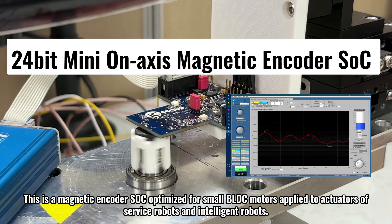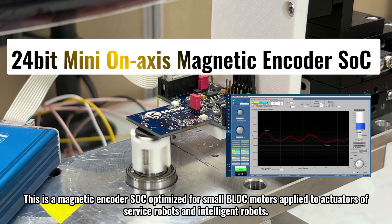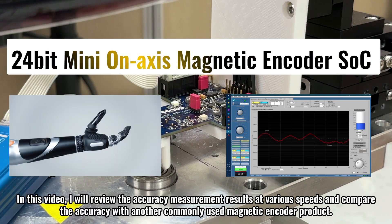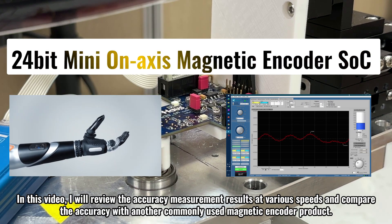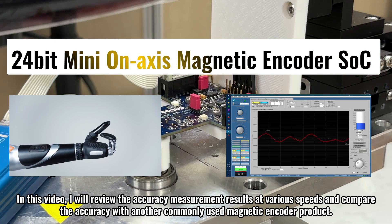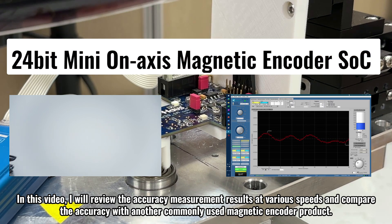I will demonstrate measuring the accuracy of a magnetic encoder using the IC-TW39 evaluation board. This is a magnetic encoder SOC optimized for small BLDC motors applied to actuators of service robots and intelligent robots. In this video, I will review the accuracy measurement results at various speeds and compare the accuracy with another commonly used magnetic encoder product.